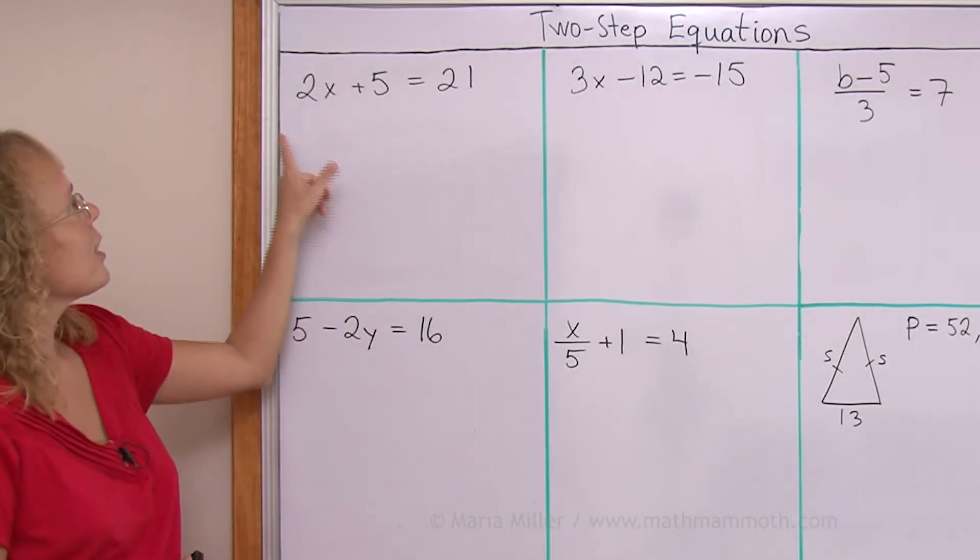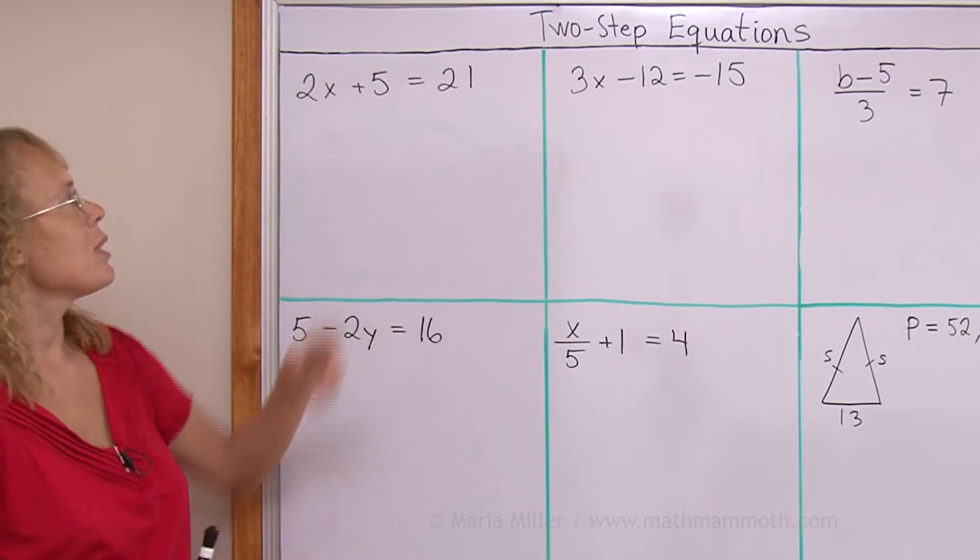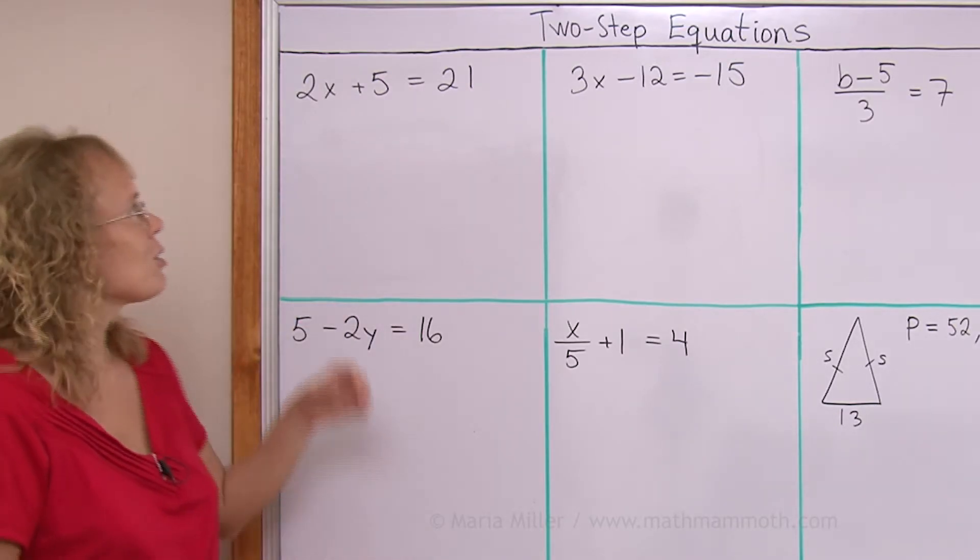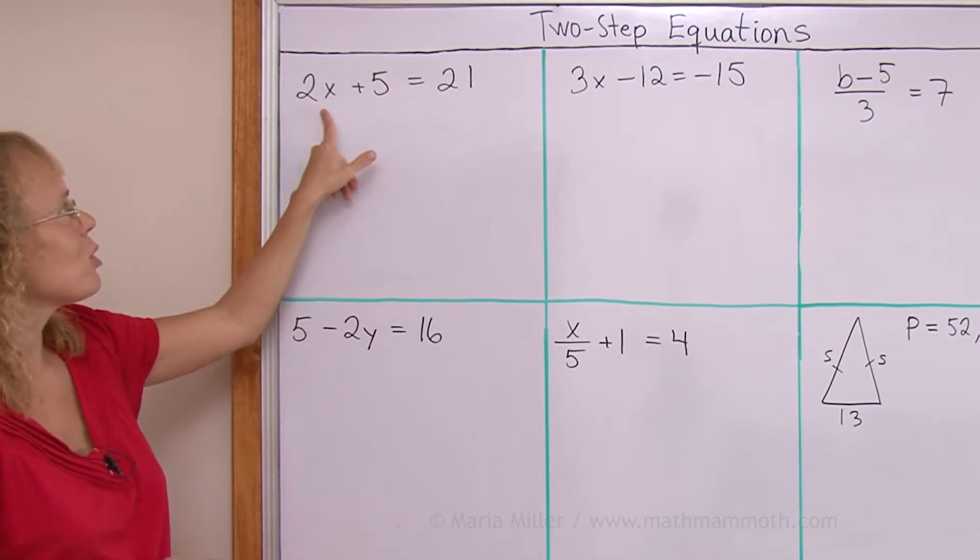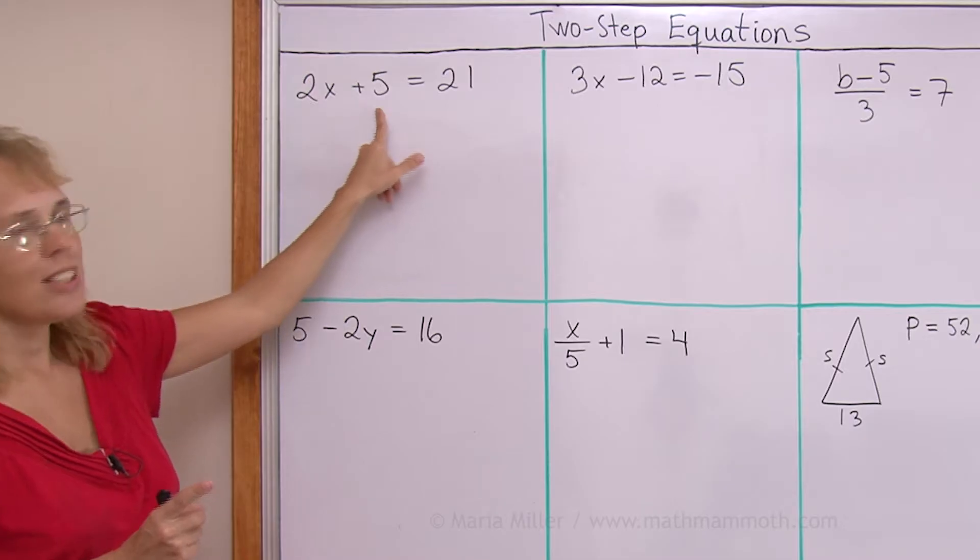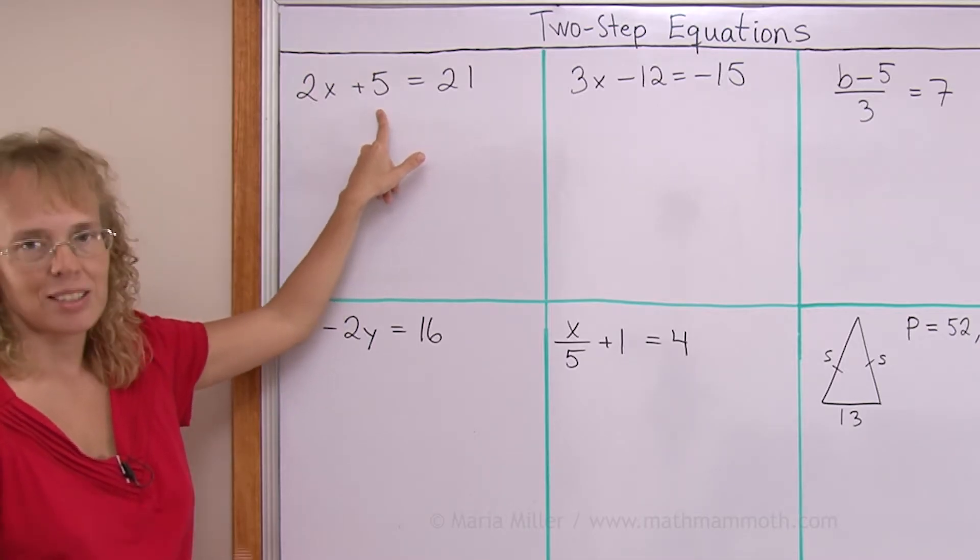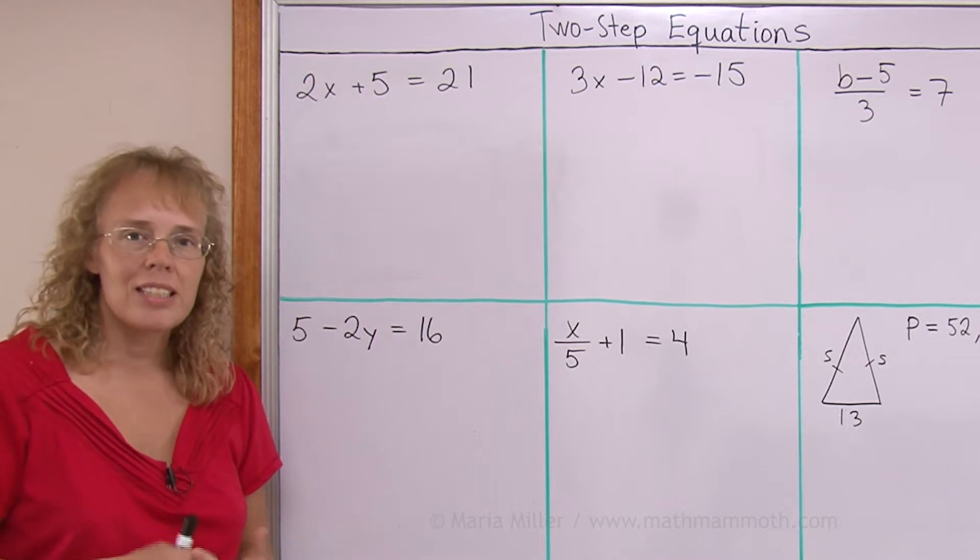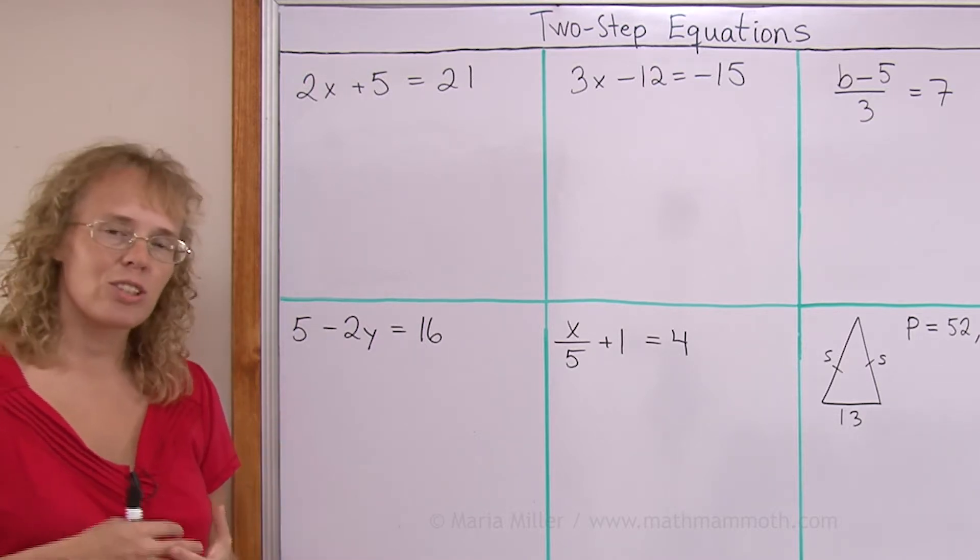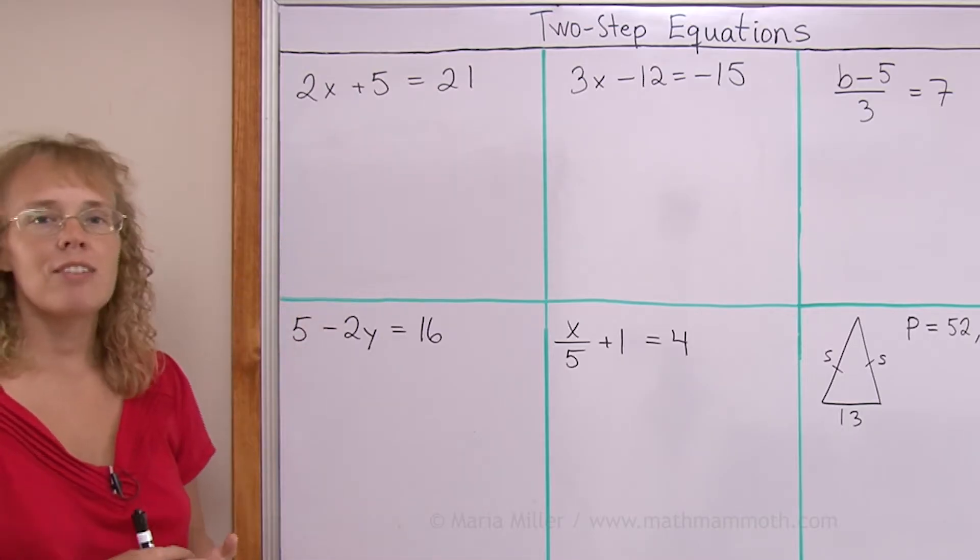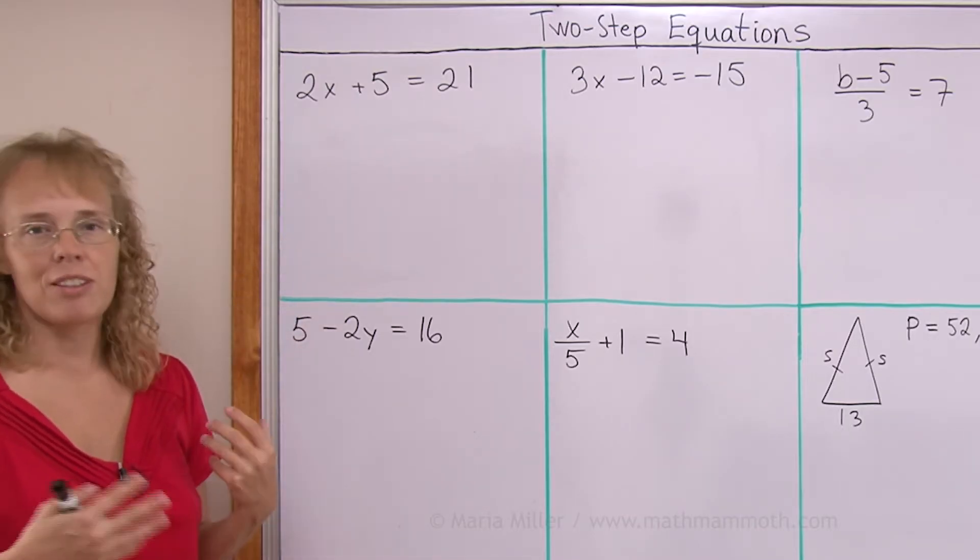Let's start here. 2x plus 5 equals 21. Now generally there are actually two ways to go about it. You could undo this multiplication by two by dividing both sides by two, or you could undo the addition of 5 by subtracting 5. But usually one way is a little bit easier, maybe avoiding fractions or something like that. In this case it is easy to first subtract 5 because then you won't have to deal with fractions.